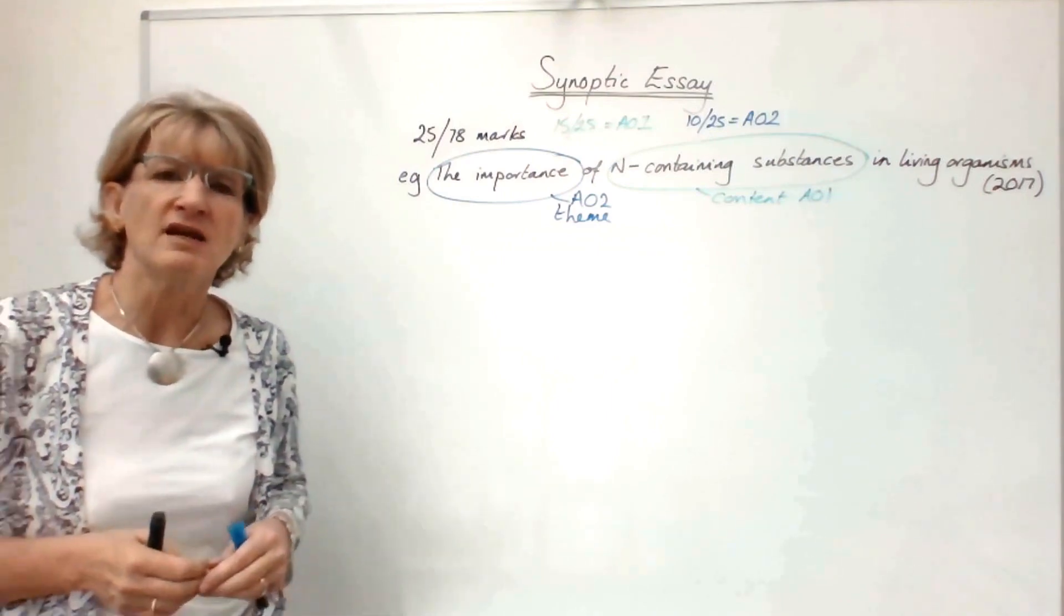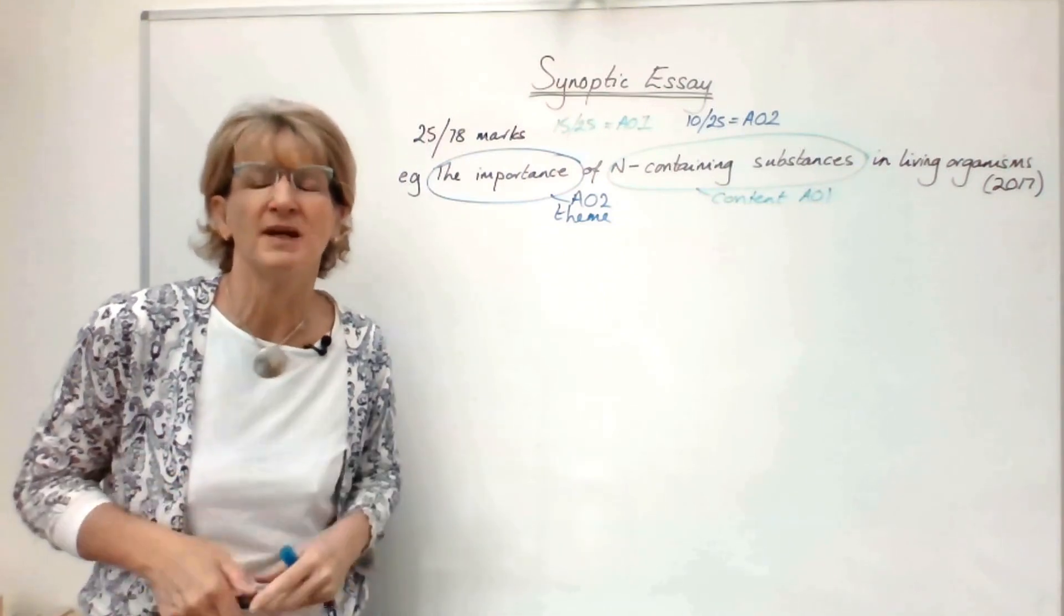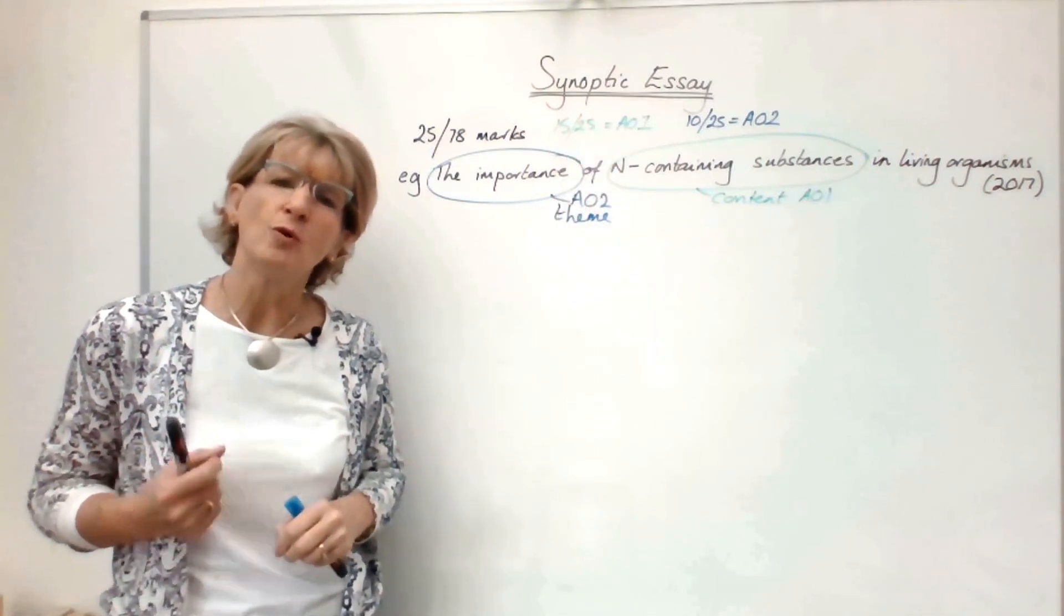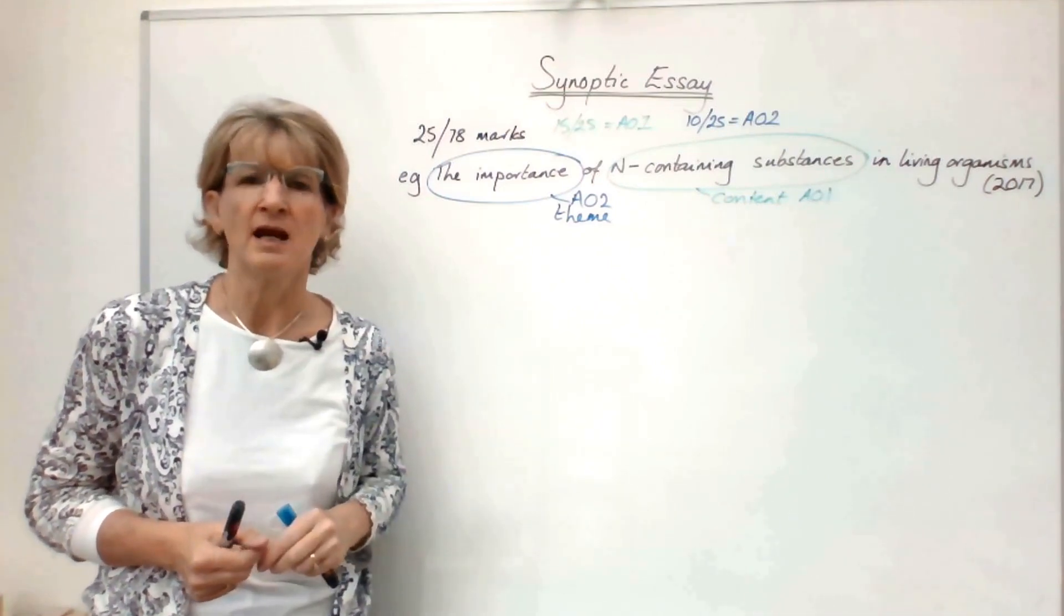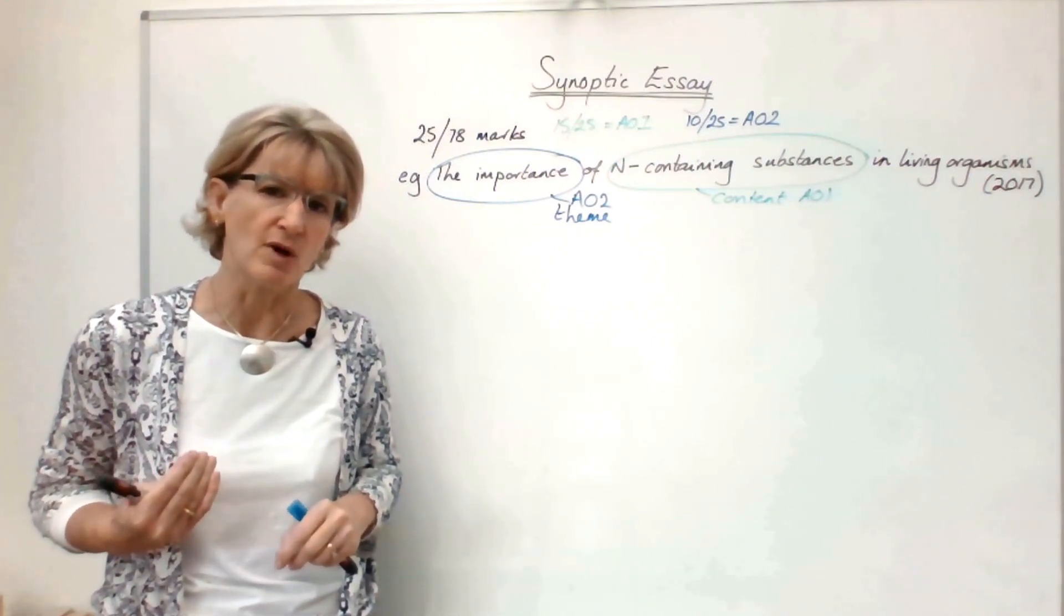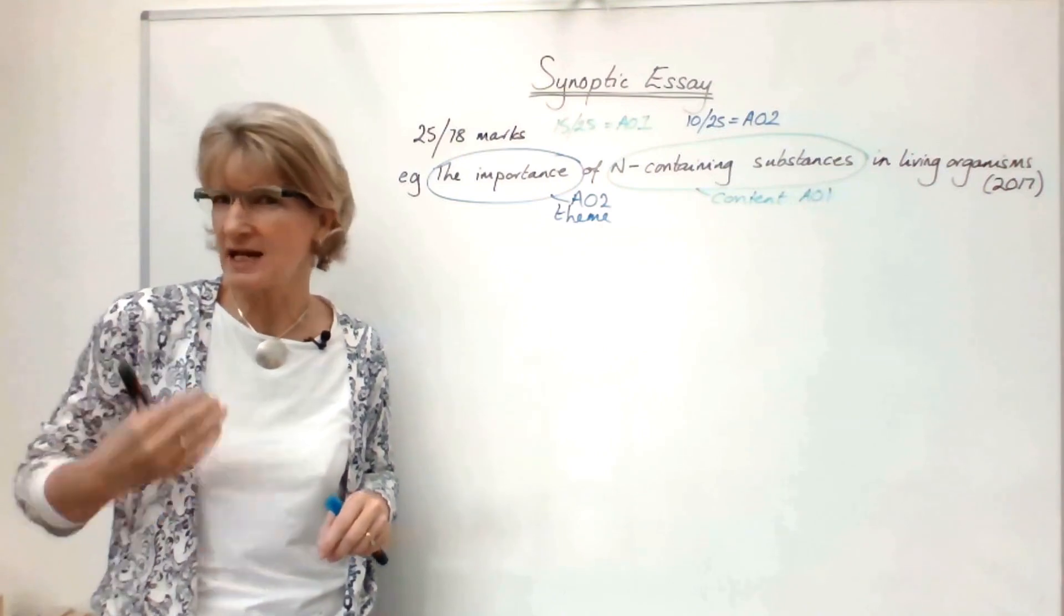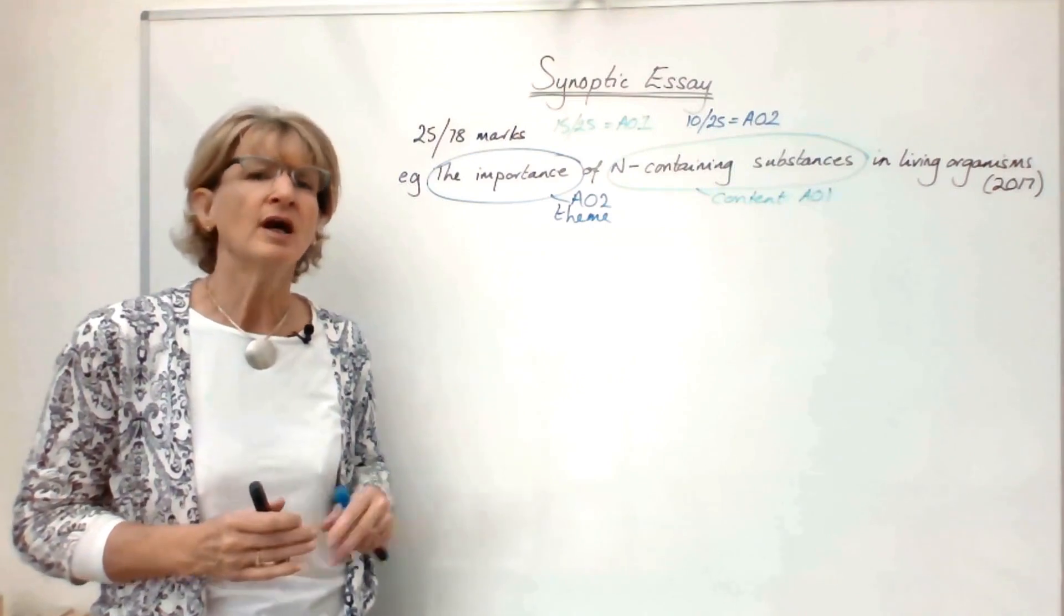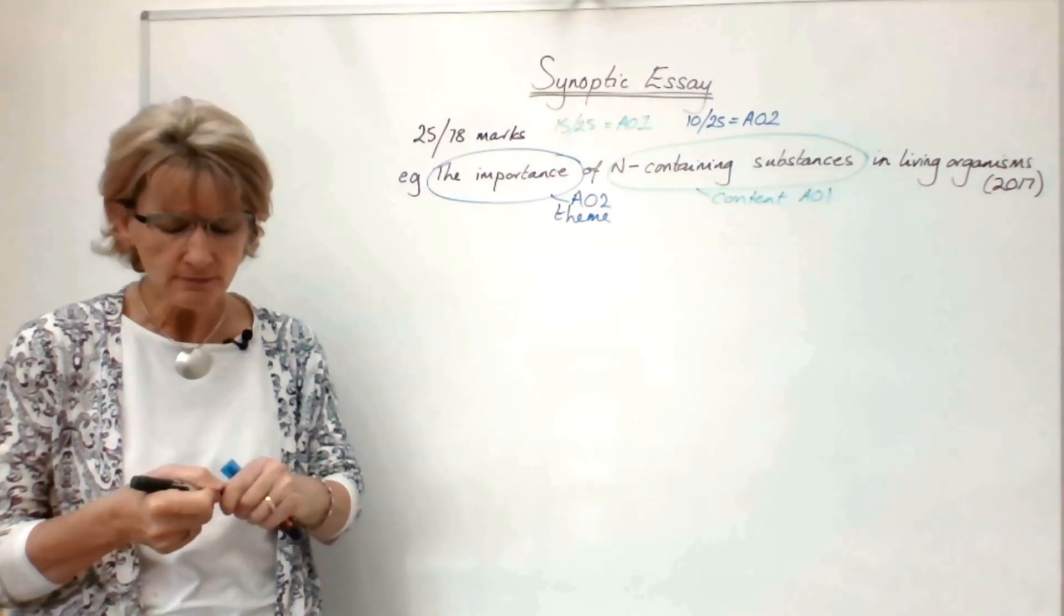If you work out the proportion of 25 out of 78 marks, it ends up being about 38 minutes. But you need to recognize that most of the AO1 marks on paper 3 are in the Synoptic Essay. That means all the questions beforehand are going to be AO2 and AO3 marks, and you're going to need more time reading those questions than you'll want to use for this essay.